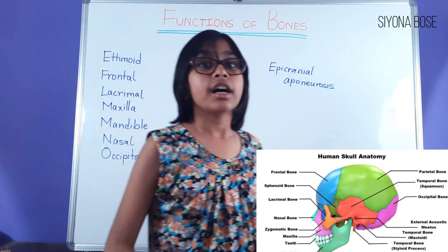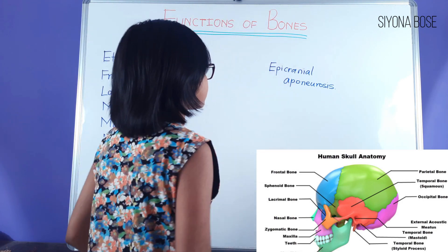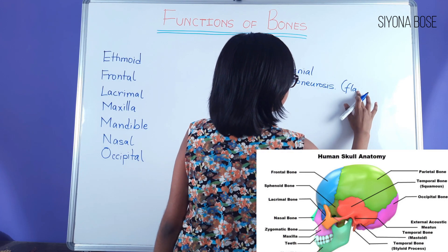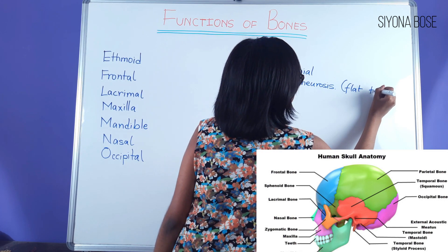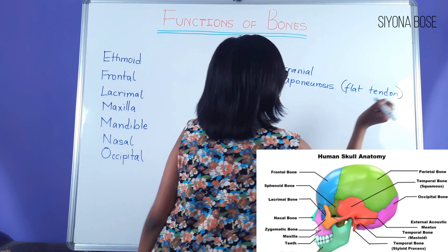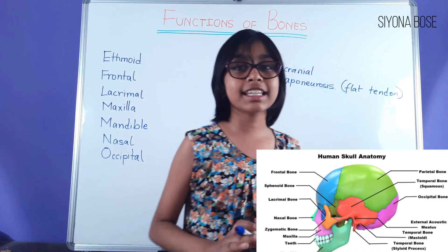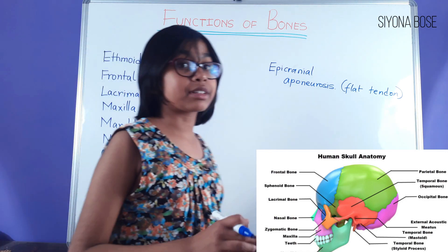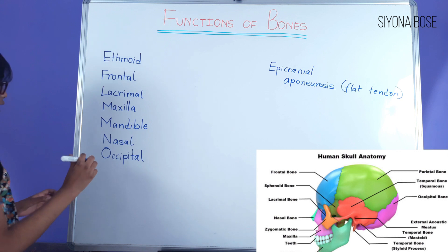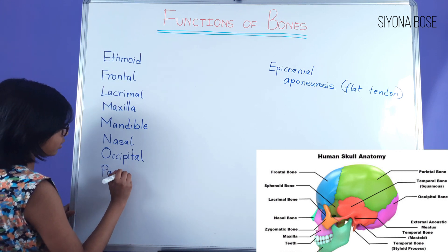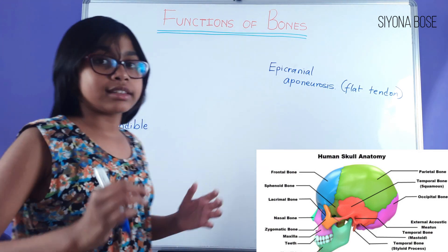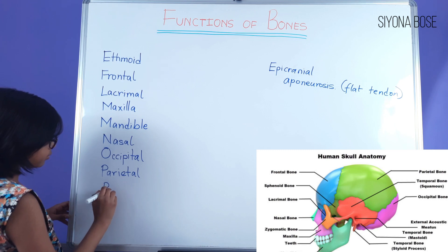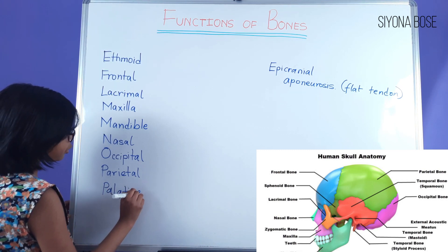An aponeurosis is a flat tendon. You may ask what is a tendon — a tendon is an extension after the muscle. Back to what we were discussing: occipital, then we have the parietal — there are two parietals present in the cranium on the two sides. And then we have the palatine, making up the roof of the mouth.